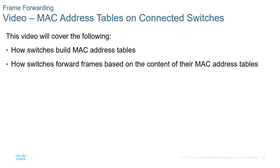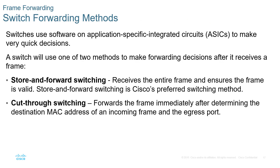There are two types of forwarding methods used in switching: store-and-forward and cut-through. Store-and-forward receives the entire frame, verifies it is valid, then forwards it — Cisco switching prefers this method. However, this means the switch must receive the entire frame before forwarding, which adds overhead. Cut-through switching forwards the frame immediately after determining the destination MAC address, meaning if there is an error, cut-through will forward the error, whereas store-and-forward will receive the frame, detect the error, and discard it.